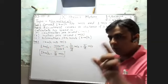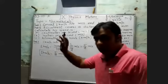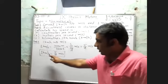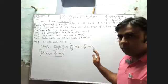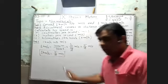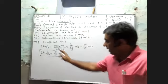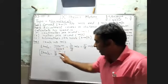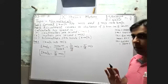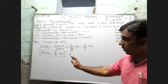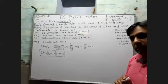Many of you students from seventh standard have done this conversion before: one kilometer per hour equals 5 upon 18 meter per second. While solving problems, when the speed is in kilometer per hour, you can directly write 5/18 meter per second.